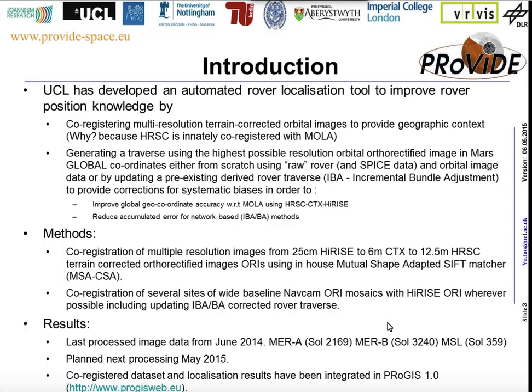We found previously in another project that the HiRISE image is slightly misaligned with CTX and therefore misaligned with HRC image. So the rover traverse from SPICE and also the bundle-adjusted traverse from our colleague at Ohio State University — the traverses do not fit any landmark with the HRC image.